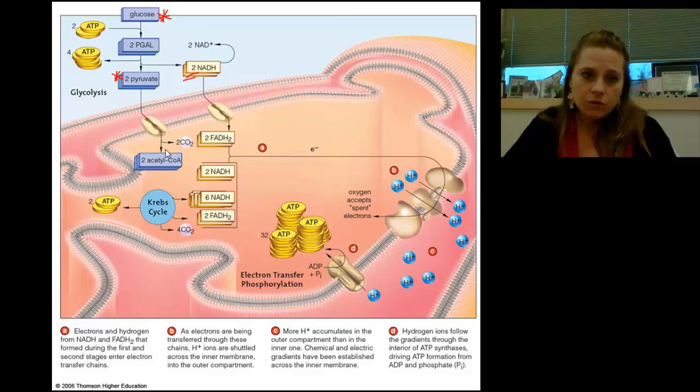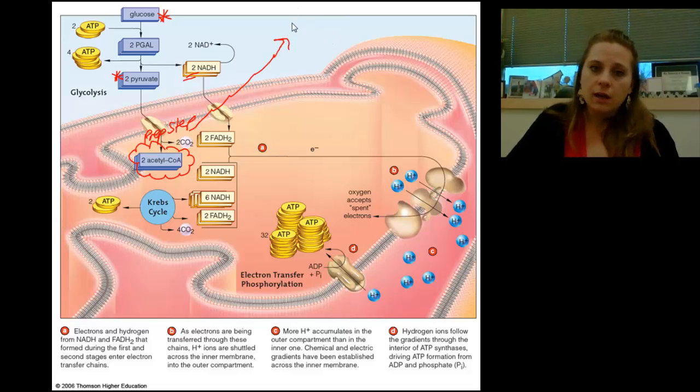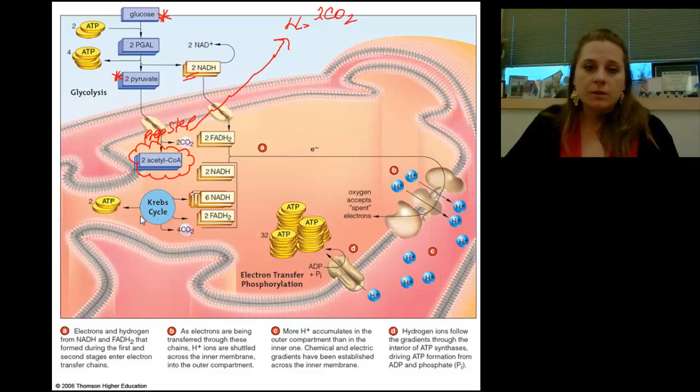So we produce that. Then my pyruvates enter into the mitochondria, into the folds. And this is my prep step here. And here is where I'm going to create from those pyruvates acetyl-CoA. In the process of creating acetyl-CoA, I spit out a carbon dioxide. And I've got two of those. So let's keep track of our carbon dioxides. I got two carbon dioxides there. Then my acetyl-CoA enters Krebs.